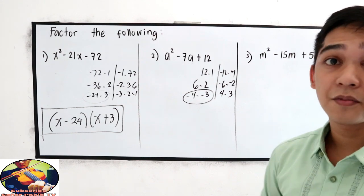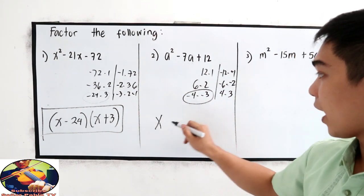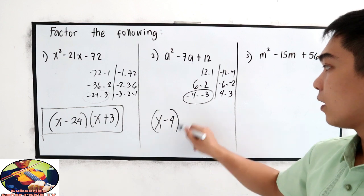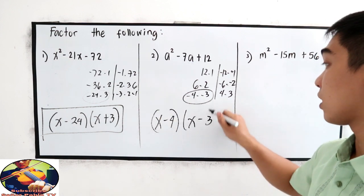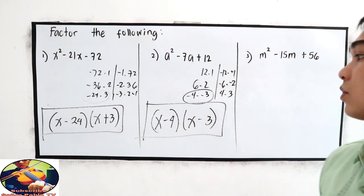Now, let us try to write the factored form, x minus 4 times x minus 3. This is now our factored form.